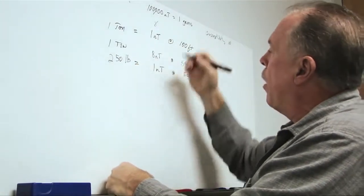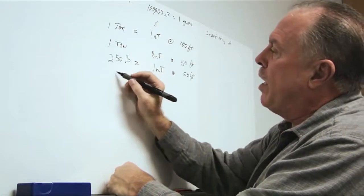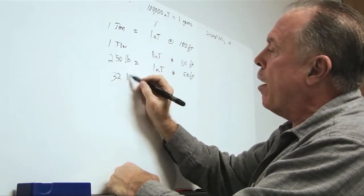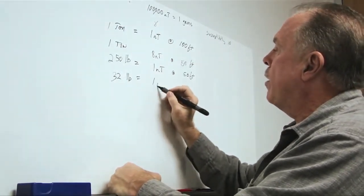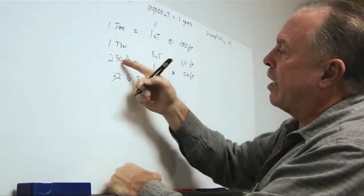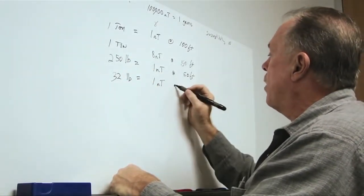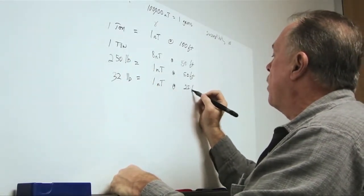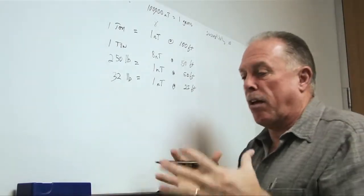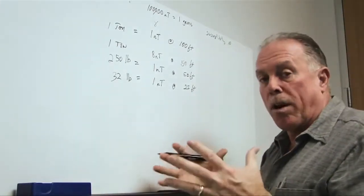Let's continue on. With the same relationship, we can get down to, say, 32 pounds equals one nanotesla. So, we cut that down by a factor of eight, so that means the distance is at 25 feet. So, now you think about something of 32 pounds, that's quite a bit of steel.